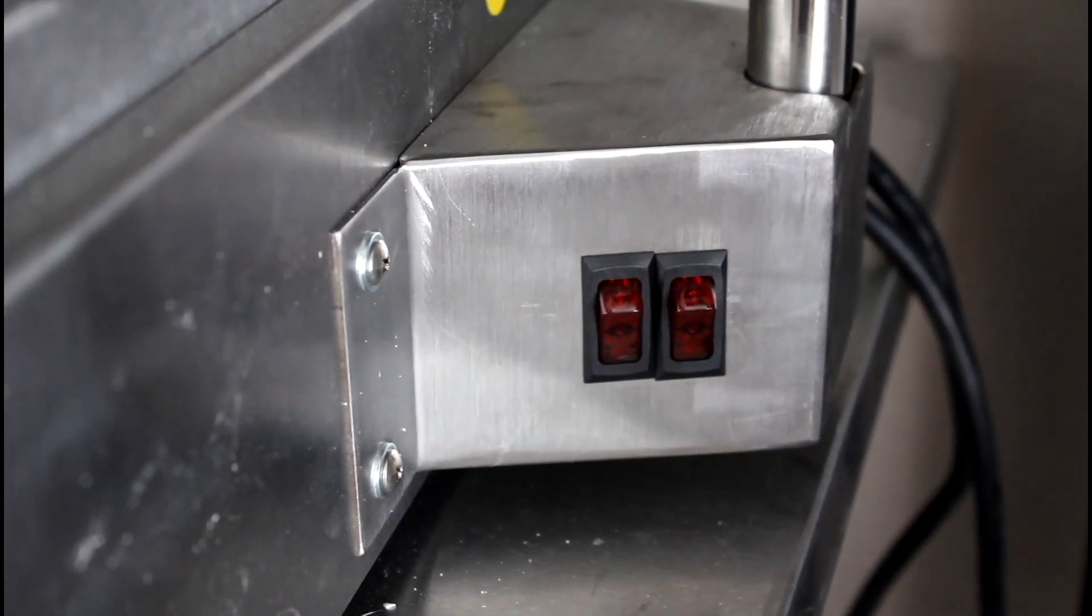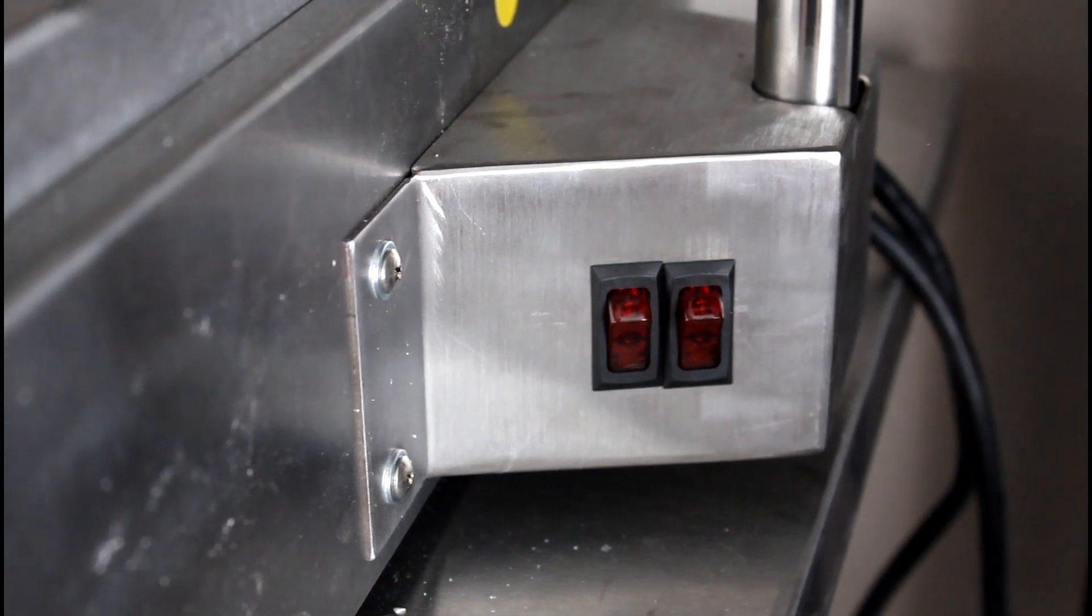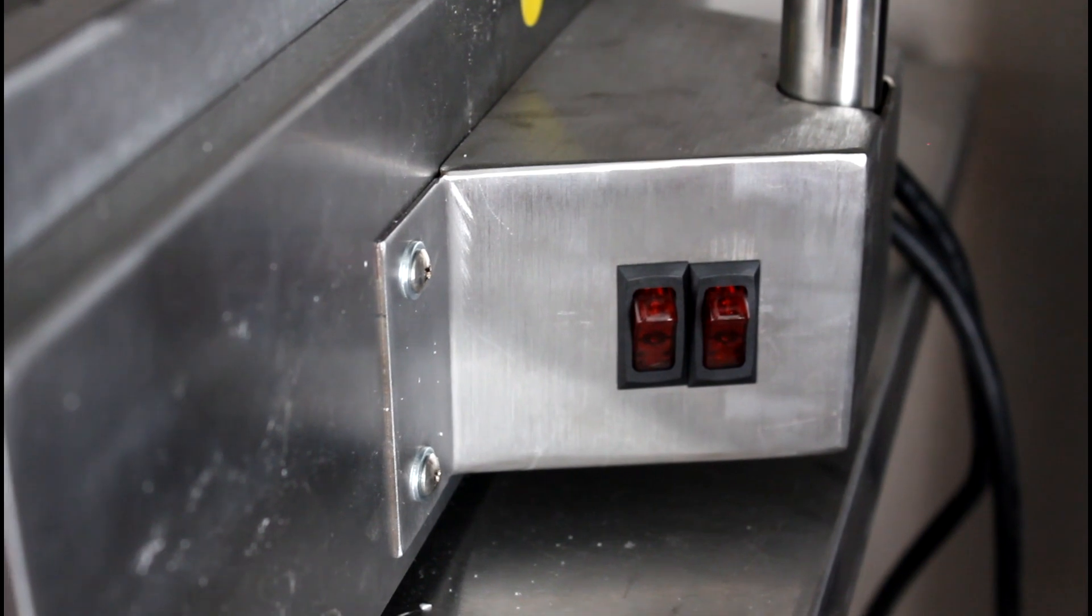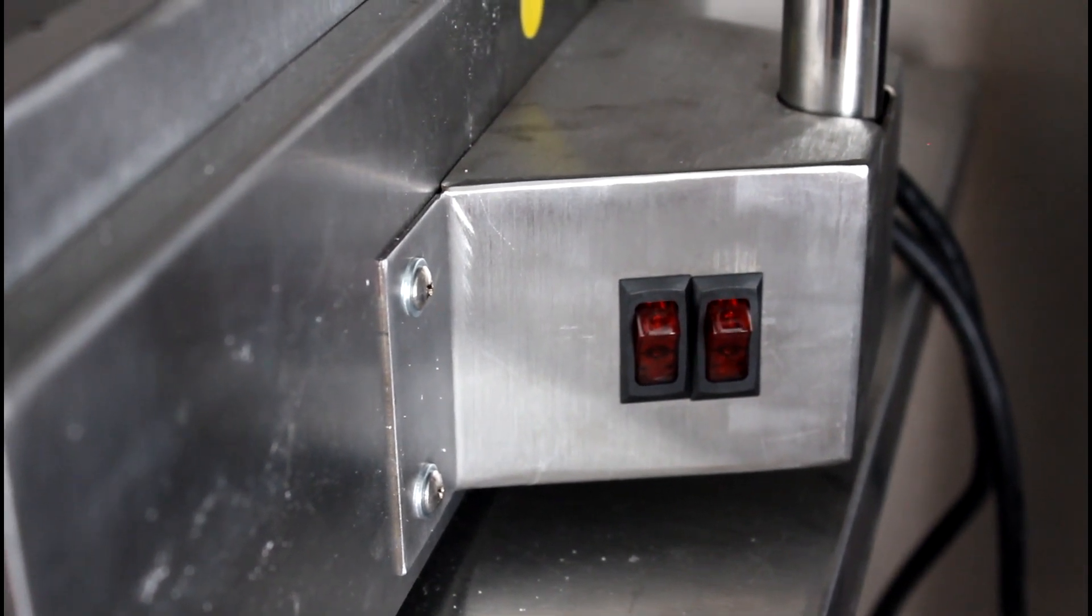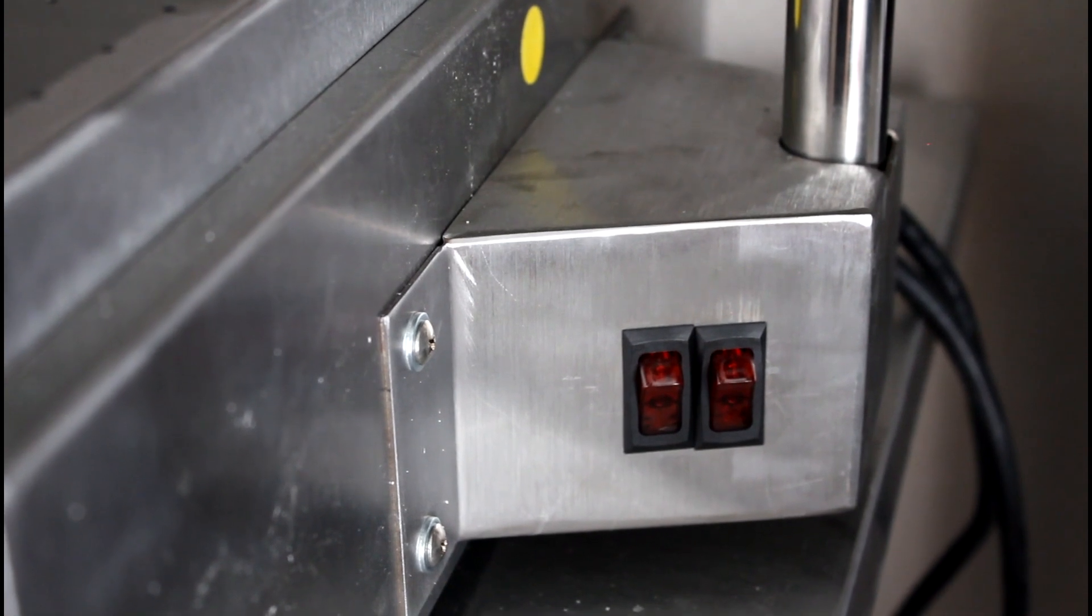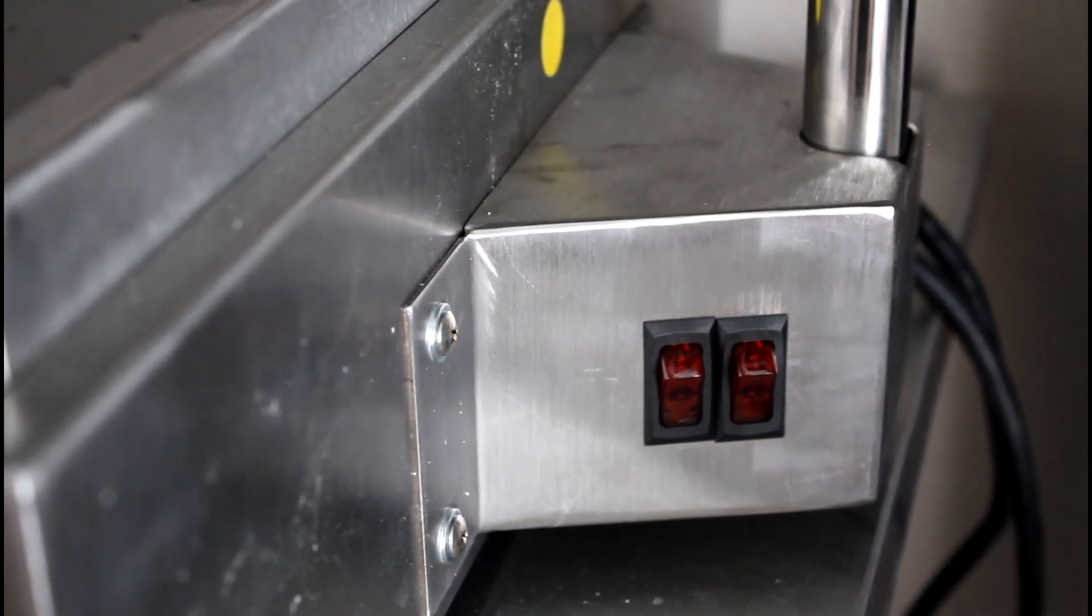Then on the right side of the vacuum former we have the heater switches. The left switch turns on the left heater, the right switch turns on the right heater. If you put them on at the same time, you're running both heaters. Or if you wanted to heat up one side of the plastic, you just turn on the left side and the other side vice versa.